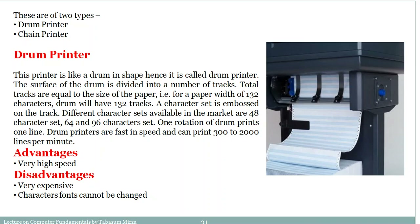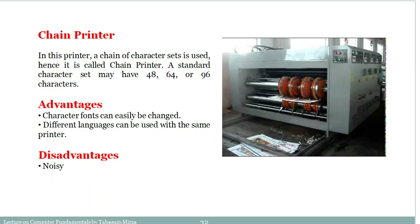Drum printers are very high speed and very expensive, but character fonts cannot be changed. Chain printers are also line printers — they produce a full line. In chain printers, a chain of character sets is used, hence the name. Standard character sets may be 48, 64, or 96 characters. Characters and fonts can easily be changed, and different languages can be used with the same printer. A disadvantage is that it is noisy because it is an impact printer.